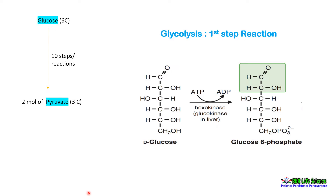Glycolysis is the principal route of metabolism for glucose as well as fructose, galactose and other dietary carbohydrates. In the process of glycolysis, one glucose molecule is converted into two molecules of pyruvate via a series of steps or reactions. This whole process is known as glycolysis, and glycolysis has a total of 10 steps or reactions.